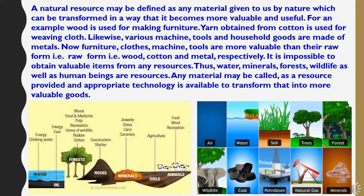A natural resource may be defined as any material given to us by nature which can be transformed in a way that it becomes more valuable and useful. For example, wood is used for making furniture. Yarn obtained from cotton is used for weaving cloth. Likewise, various machines, tools, and household goods are made up of metals. Furniture, clothes, machines, and tools are more valuable than their raw form.